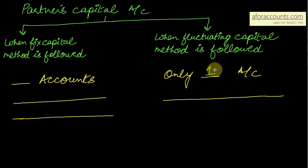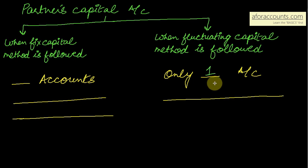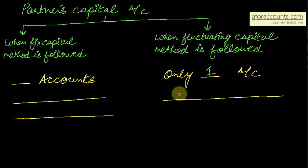As the name suggests, the capital account balance keeps changing — plus minus ho raha hai. Under the fluctuating capital method, only one account is maintained, and that account is the partner's capital account.